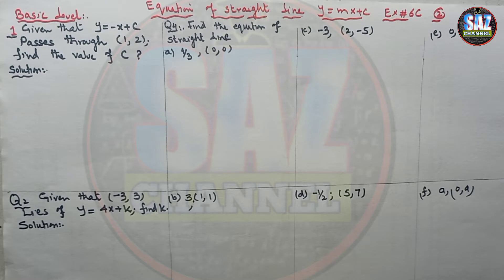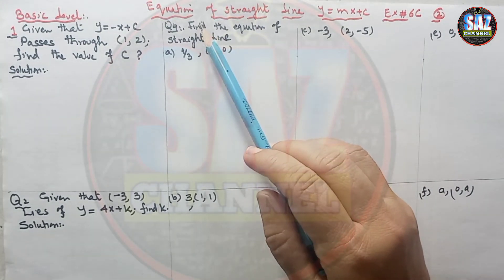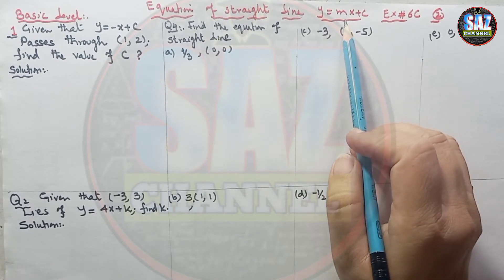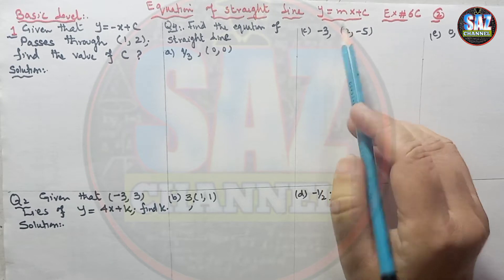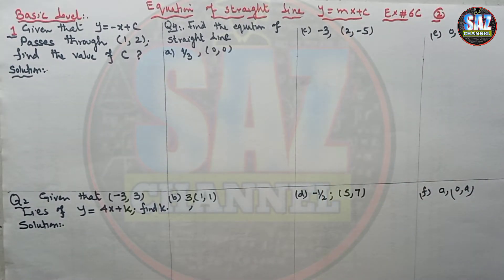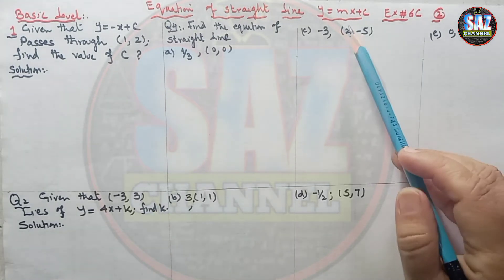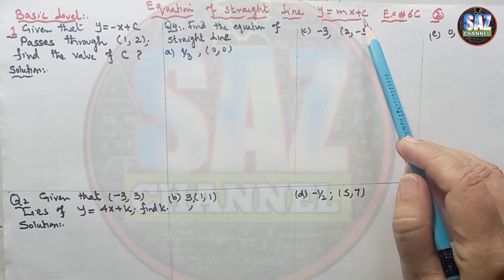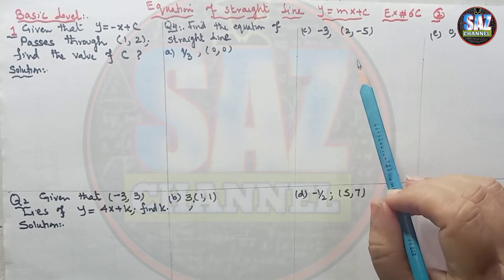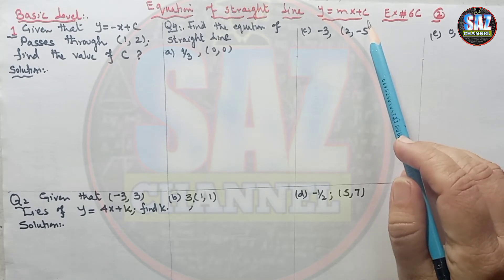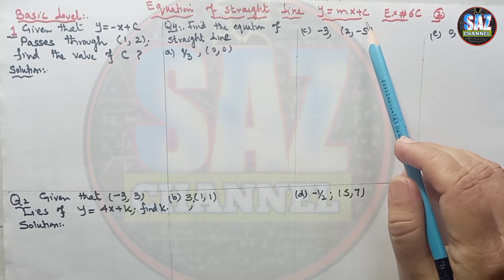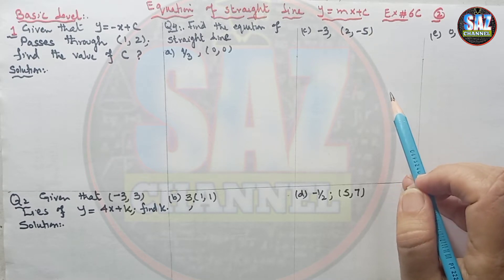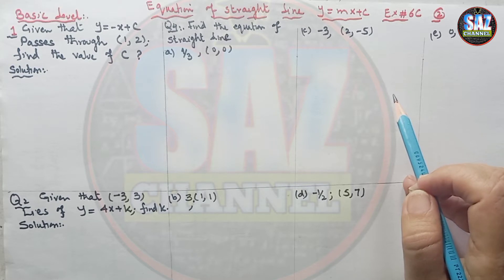Hello and welcome to Maths by SAS. This is my second lesson on the equation of a straight line y = mx + c. In this lesson I will discuss basic level questions. Before going to the lesson, I want to say that for understanding you should have watched the previous lesson carefully — knowing what m and c are, how to calculate them when two points are given, or when m is given and you need to find c. Maths lessons require continuous practice and integration, so the previous lesson must be clear.